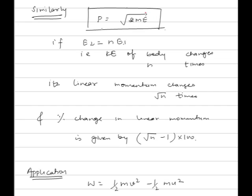Similarly, for the relation between p and E: linear momentum of a body is equal to square root of 2m into e. So if kinetic energy of a body changes n times, linear momentum of the body changes by under root n times. The percentage change in linear momentum is then given by the equation (under root n minus 1) into 100.